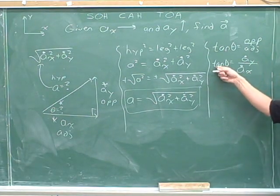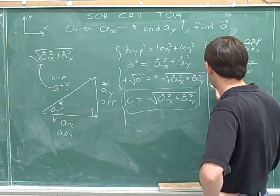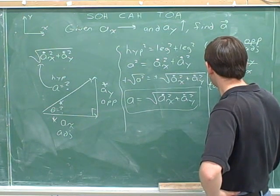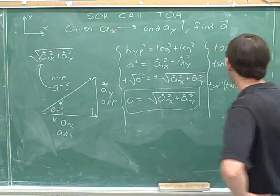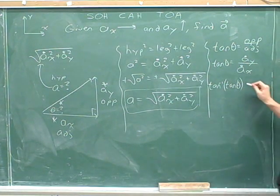To get rid of this tangent, we have to take the inverse tangent, the opposite. And then we have to take the inverse tangent of the right-hand side.